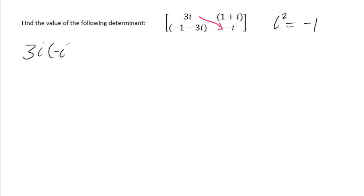Then you're going to get 3i multiplied by minus i. Remember that when you go to the opposite direction you must subtract, so when you go to that direction you subtract.